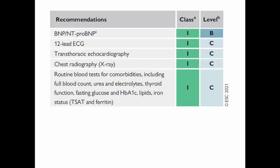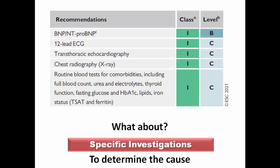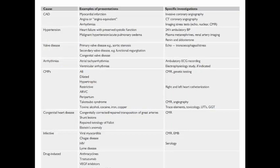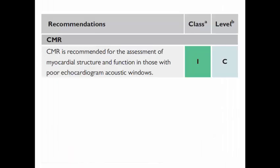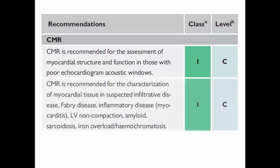These are the basic investigations for any patient with a provisional diagnosis of chronic heart failure. For specific investigations to determine the cause of LV dysfunction, cardiac MRI has a class 1 recommendation to assess myocardial structure and function in poorly echogenic patients, and also a class 1 recommendation when suspecting infiltrative disease, Fabry disease, myocarditis, non-compaction, amyloidosis, sarcoidosis, or iron overload.